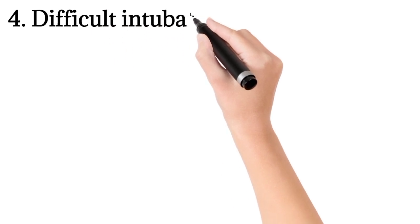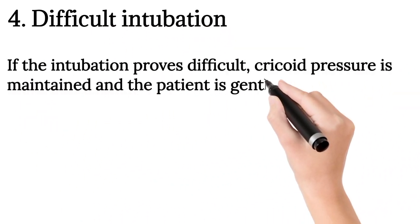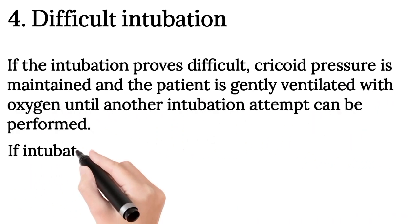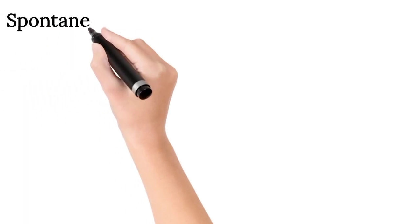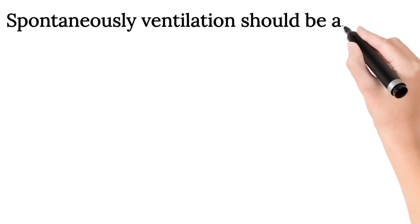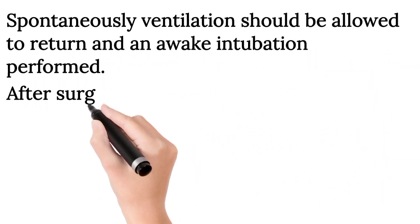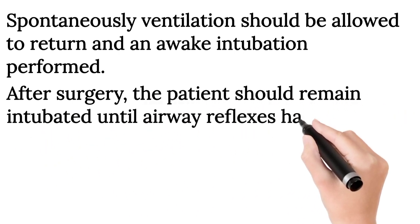Difficult intubation: If the intubation proves difficult, cricoid pressure is maintained and the patient is gently ventilated with oxygen until another intubation attempt can be performed. If intubation is still unsuccessful, spontaneous ventilation should be allowed to return and an awake intubation performed. After surgery, the patient should remain intubated until airway reflexes have returned and consciousness has been regained.